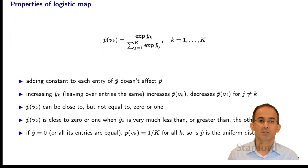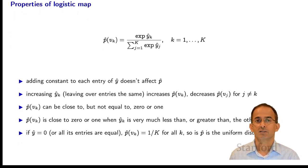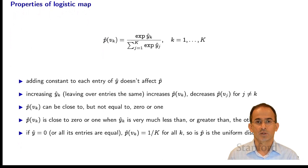There's one more special case: when y-hat is 0, you end up with p-hat of v_k being the uniform distribution 1/K. In fact, if y-hat is any vector with all of its entries equal, you'll also end up with the uniform distribution.